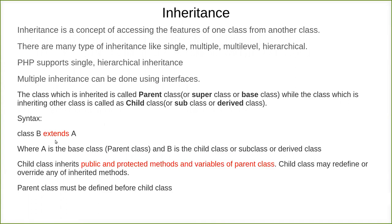So how do you inherit a class? Here we have a parent class and a child class. A child class can inherit the parent class by using the keyword `extends`. After naming the child class, you write the keyword `extends` and then the parent class name. So it says that class B is inheriting the properties of class A, where A is the base class.